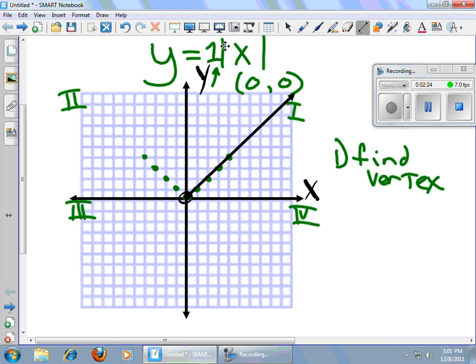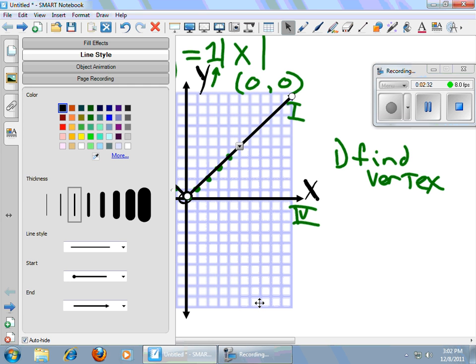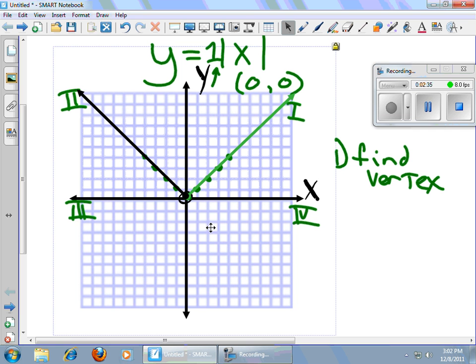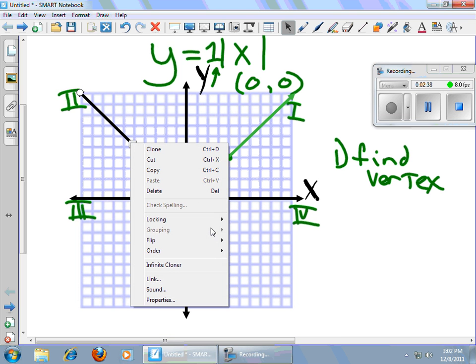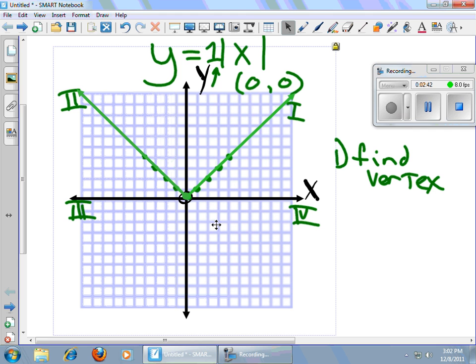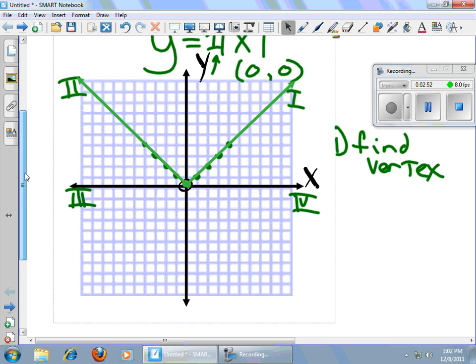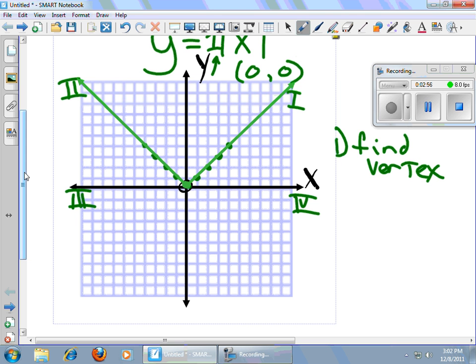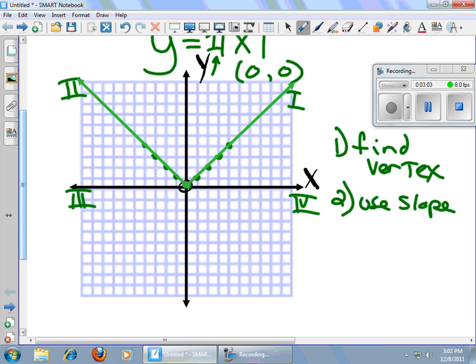So it ends up looking kind of like this. I'll get this one drawn. We have Y equals the absolute value of X. I forgot to tell you what step two was. Step two was to use the slope to get the other points.